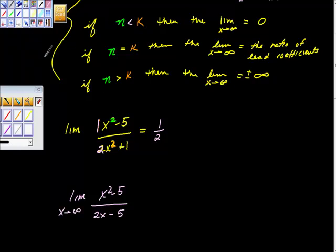Well, again we look for the values of n and k. The value of n is 2, the value of k is 1. So here we have n is greater than k, so we're at this rule right here, aren't we?